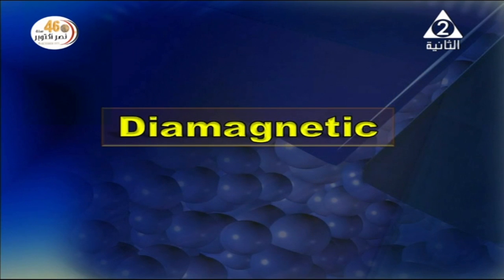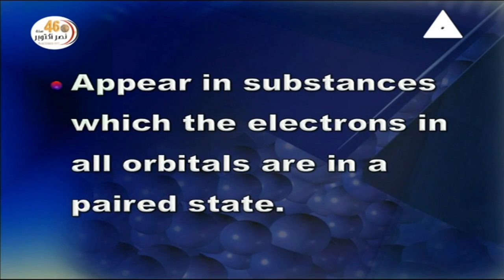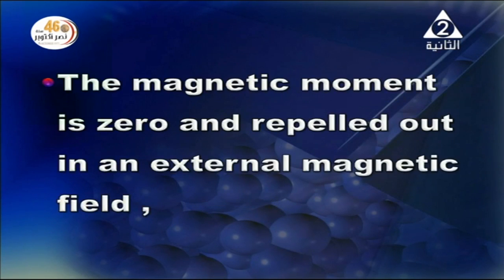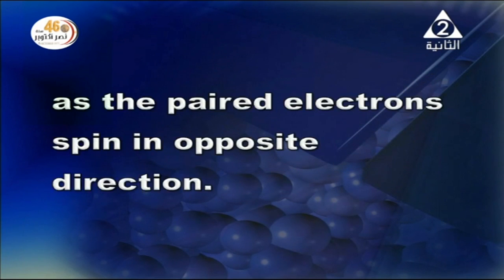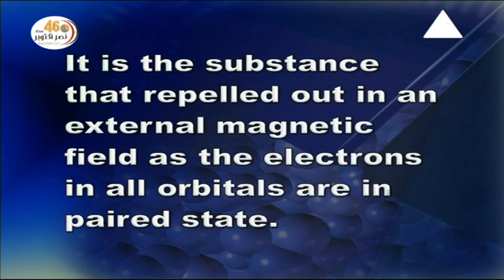The diamagnetic property appears in substances in which all electrons in the orbitals are paired, and the magnetic moment is zero, so they are repelled by an external magnetic field. The paired electrons spin in opposite directions, so no net magnetic property is detected. A diamagnetic substance is defined as one that is repelled by an external magnetic field because all electrons in its orbitals are paired.